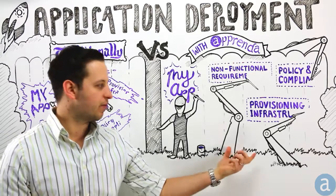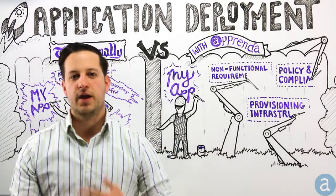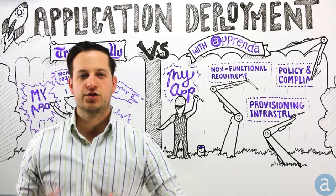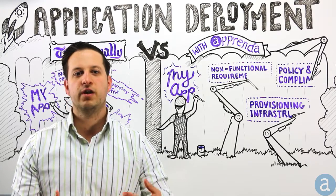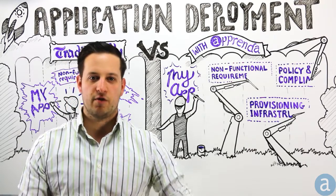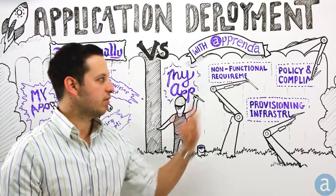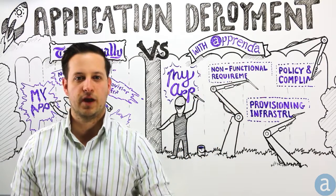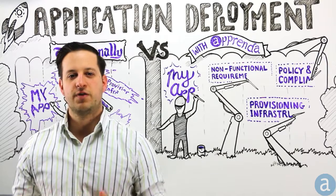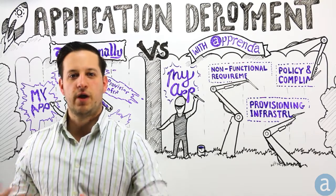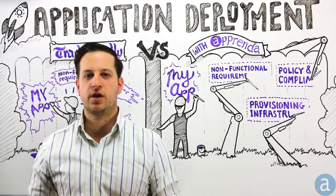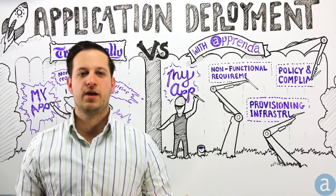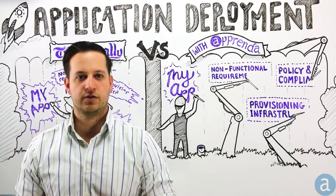Now leveraging the Apprenda technology to automate, implement, and inject all of this additional functionality that is not really relevant to the business from a value-driven point of view — things like non-functional requirements, policy, compliance, and provisioning infrastructure. These are all things you need to do anyway to deploy your application in your enterprise, but they do not provide immediate value the way the application itself does.